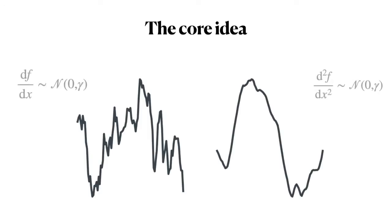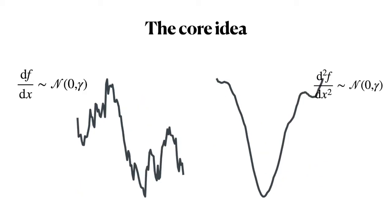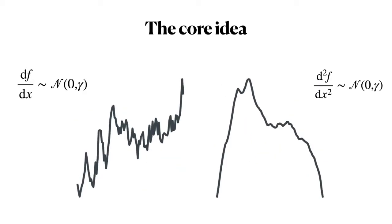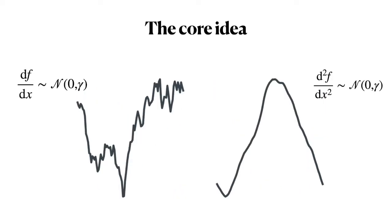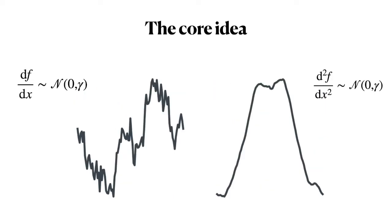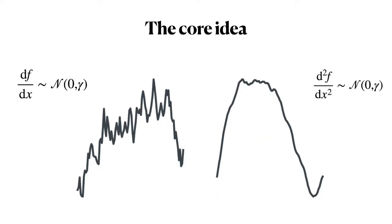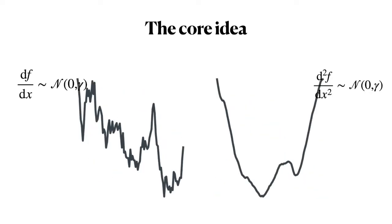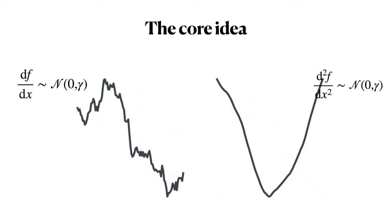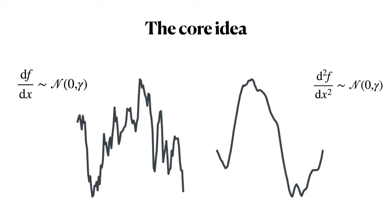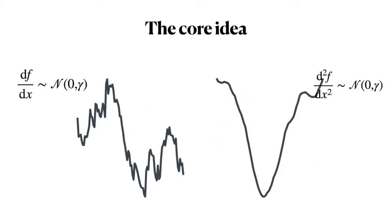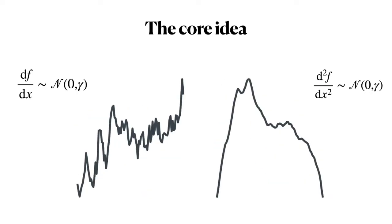Let's talk about how this idea works. The core component is to make assumptions either about the slope of the function — the first derivative — or the curvature. If we assume that the slope is distributed normally, we get plots like the ones on the left-hand side, and if we assume that the curvature is distributed normally, we get plots like the ones on the right.